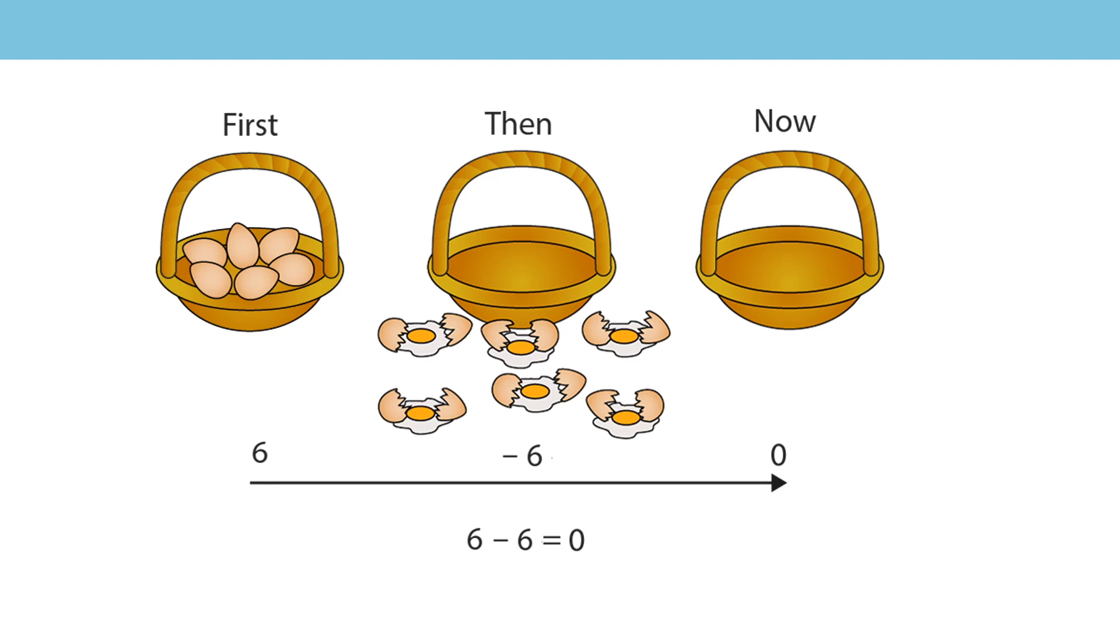The zero represents that there's no eggs left in my basket. What does the first six represent? The first six represents the eggs that I had to start with. What does the second six represent? The second six represents all of the eggs that were broken. Do you notice anything about these numbers?